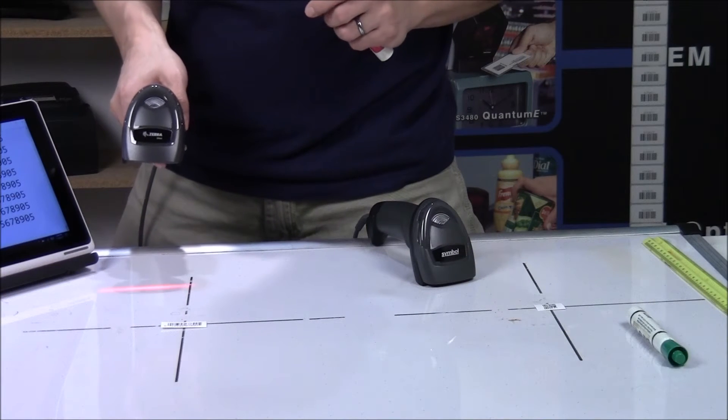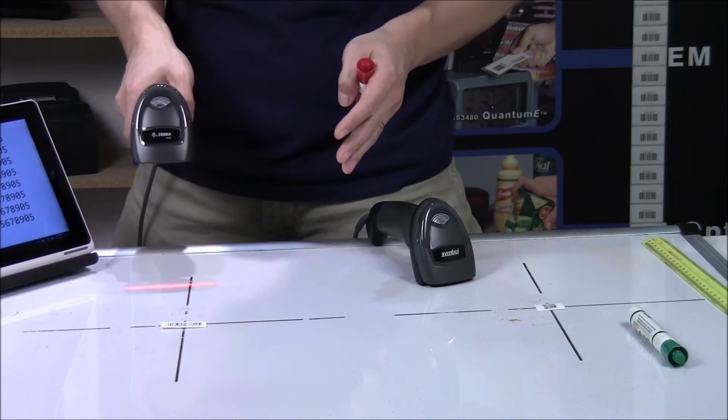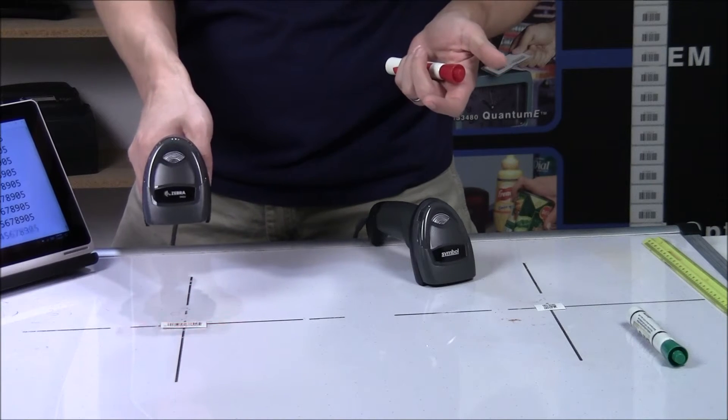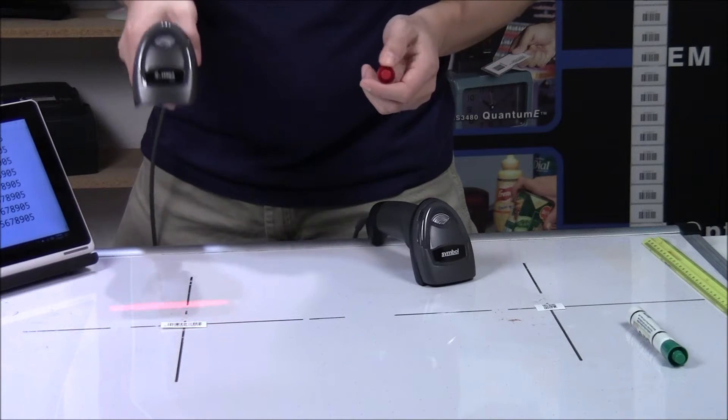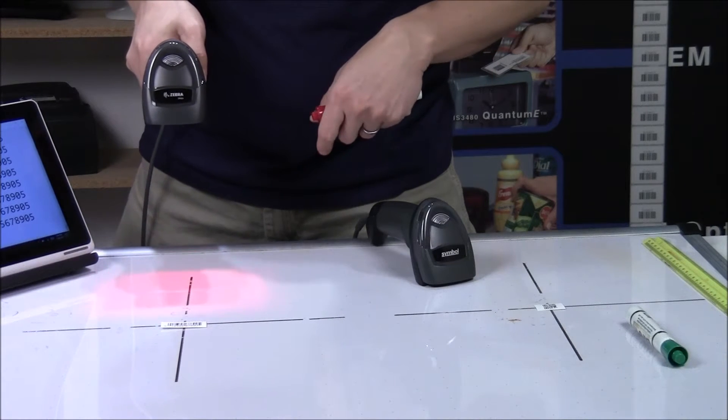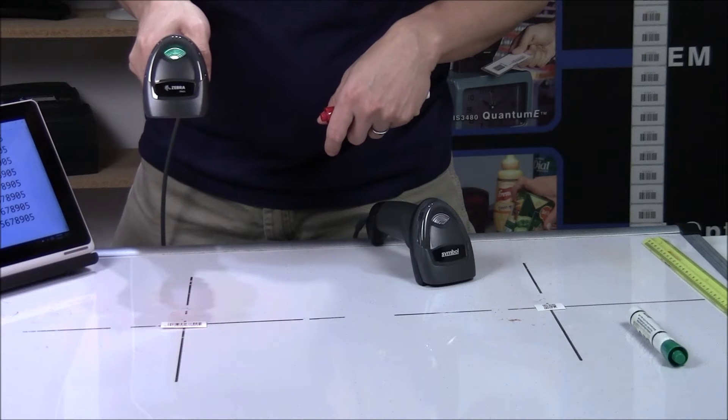So, the next test I want to show is basically how far off center you can be and still get a scan. Of course, when you scan directly on center, you can scan no problem. So, how far back can you be and get a correct scan? So, I'm going to start with vertical. So, I'll come up to the barcode from the bottom.